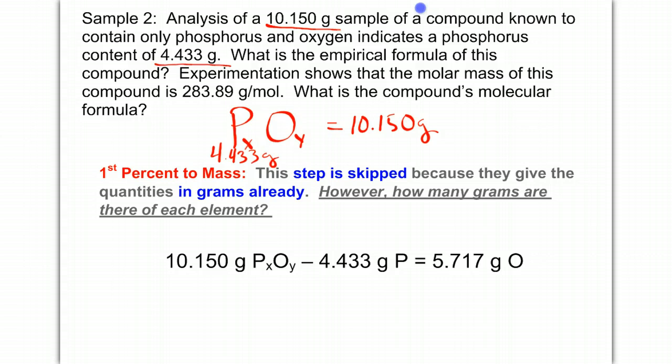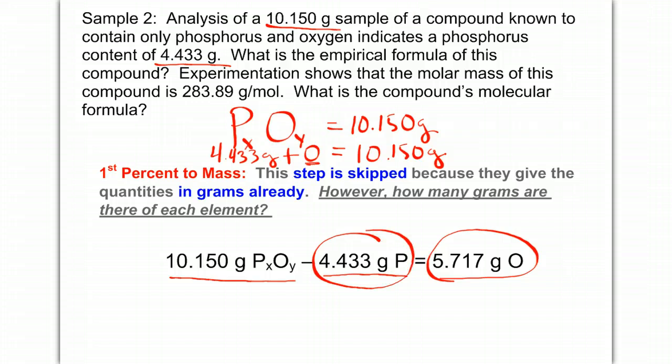Recall that we have a compound made up of phosphorus and oxygen. The whole sample equals 10.150 grams. If phosphorus is 4.433 grams, which was given here, then can I figure out what is the oxygen? We would add the total masses together. So if we do the math, we'll take 10.150 grams, subtract the grams of phosphorus, and obtain grams of oxygen: 5.717 grams.